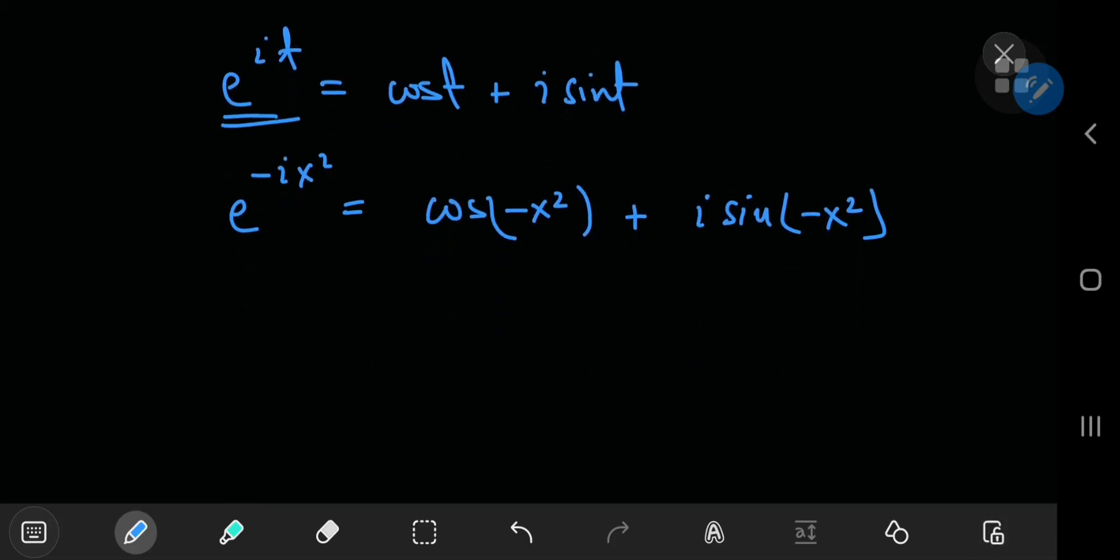We know that cosine is an even function, so you can ignore this negative sign. And sine is an odd function, so you can pull this negative sign out here.